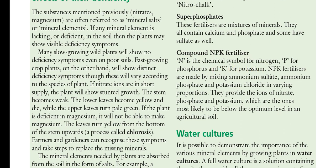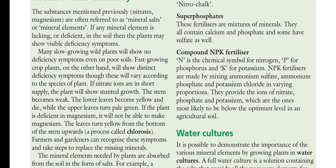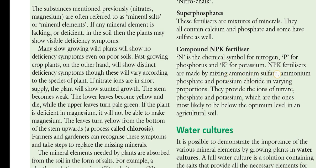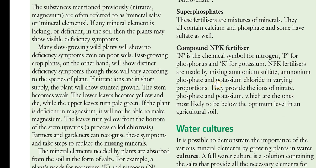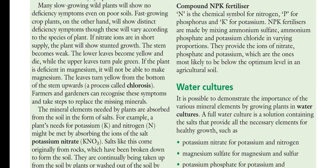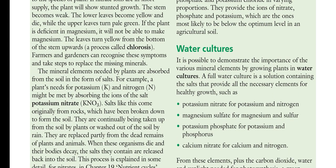NPK fertilizers contain nitrogen (N), phosphorus (P), and potassium (K). They are made by mixing ammonium sulfate, ammonium phosphate, ammonium chloride, and potassium chloride in varying proportions. They provide nitrate, phosphate, and potassium ions — the nutrients most likely to be below the optimum level in agricultural soil.